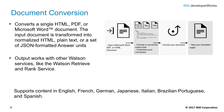The IBM Watson Document Conversion Service converts a single HTML, PDF, or Microsoft Word document into normalized HTML, plain text, or a set of JSON-formatted answer units that can be used with other Watson services. This service is commonly used with a collection of unstructured data and documents during the content preparation phase for the Retrieve and Rank Service.